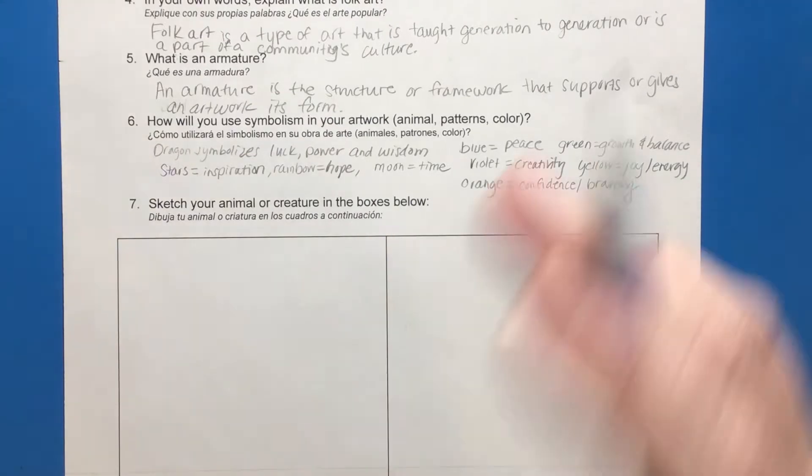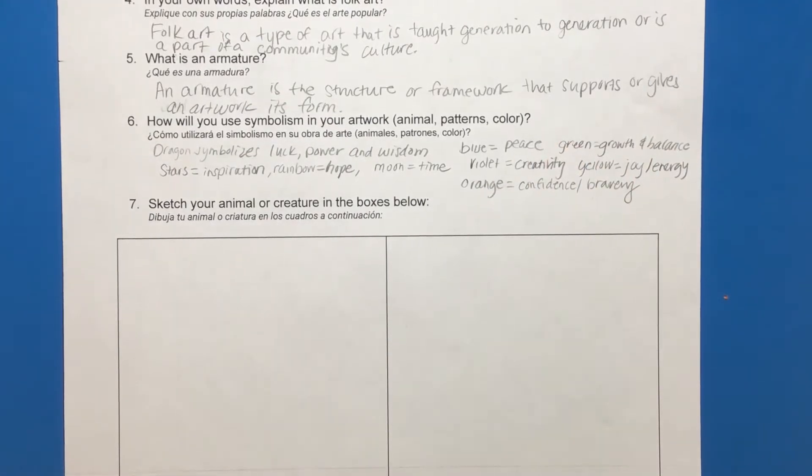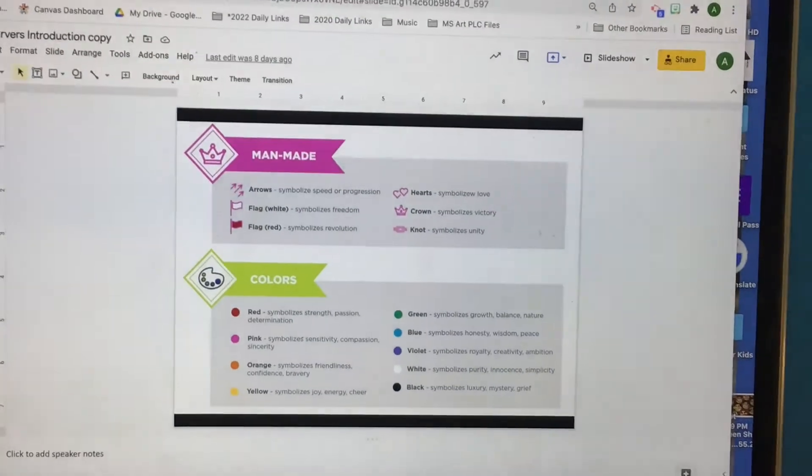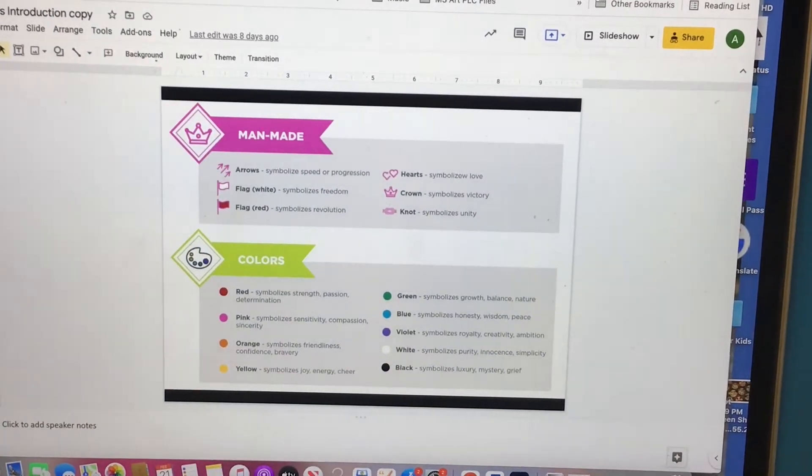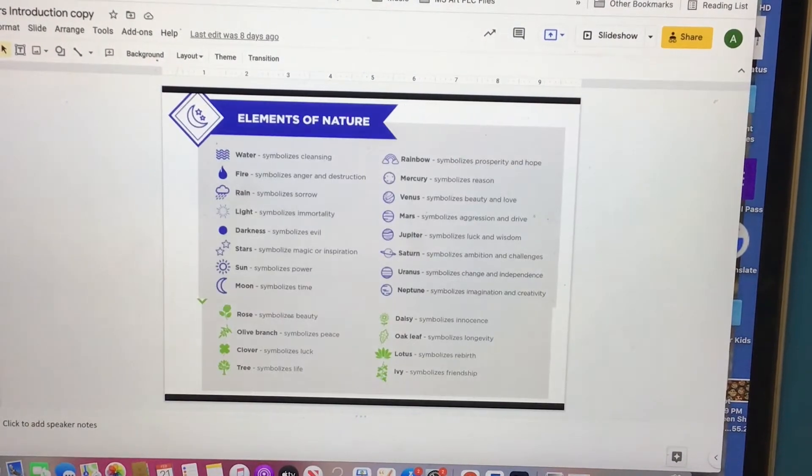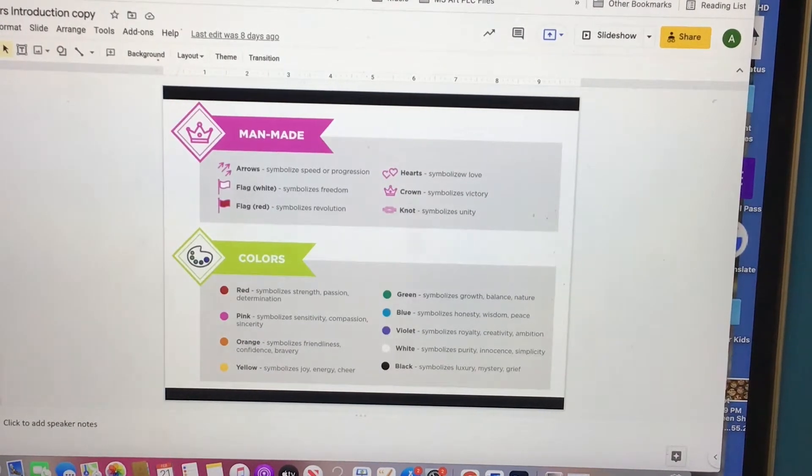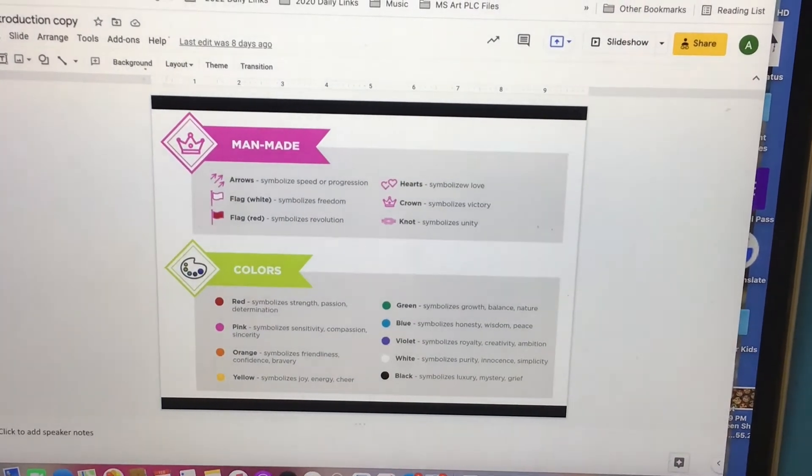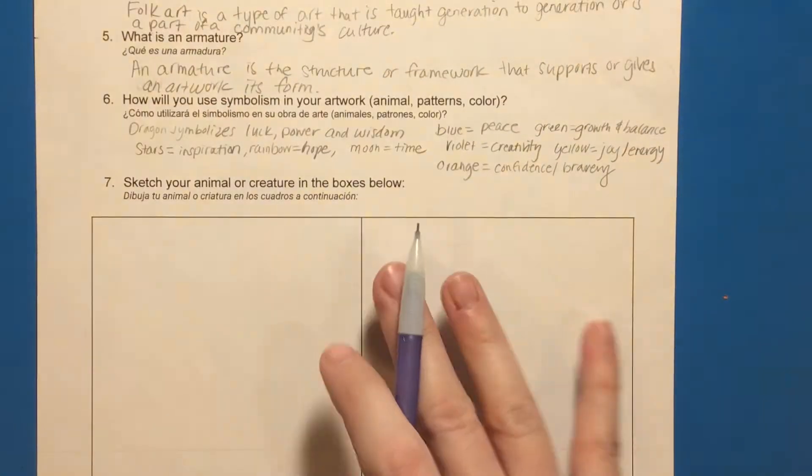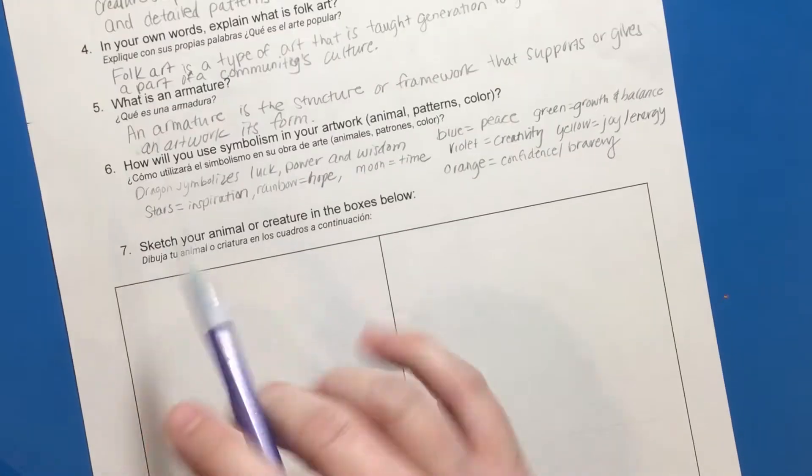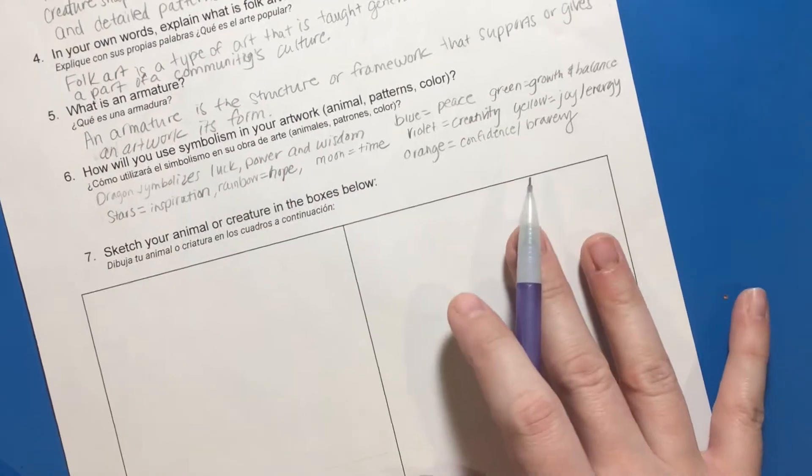So as I got started, I took a look at the PowerPoint and I looked at the different animals, the different symbols that I could pull into my patterns, and I also looked at different color options as well. And so I settled on the idea of a dragon because a dragon symbolizes luck, power, and wisdom.